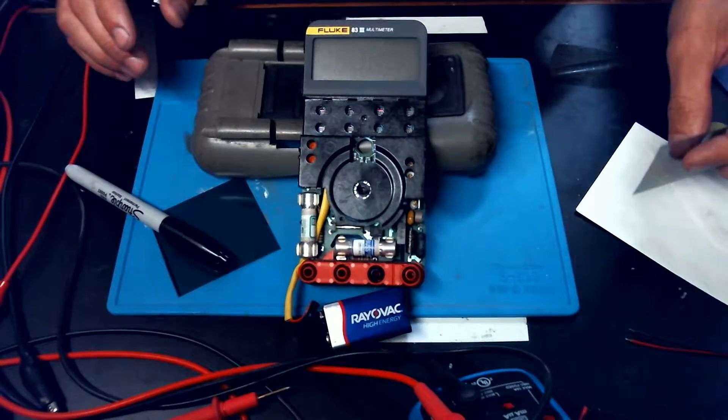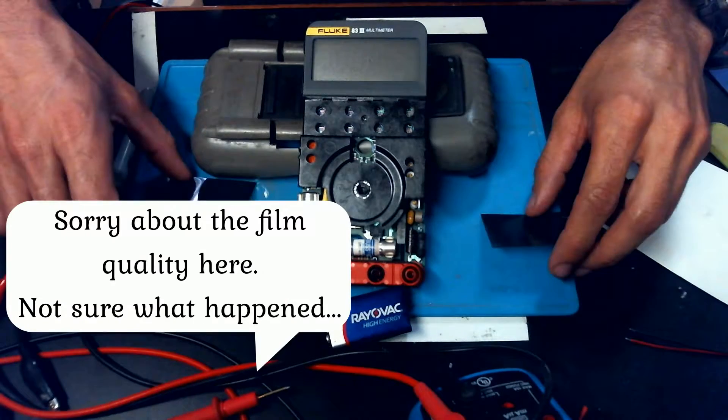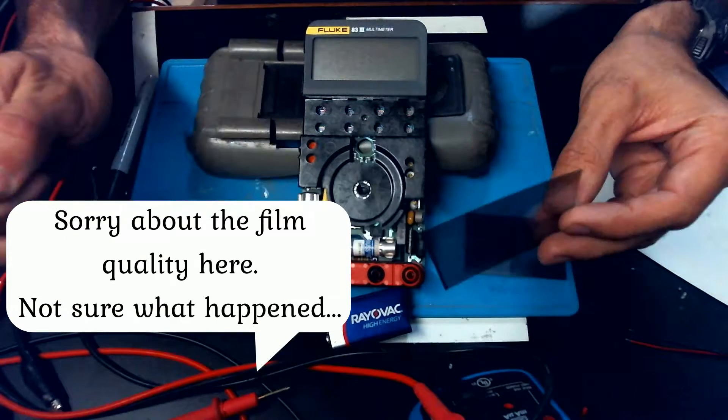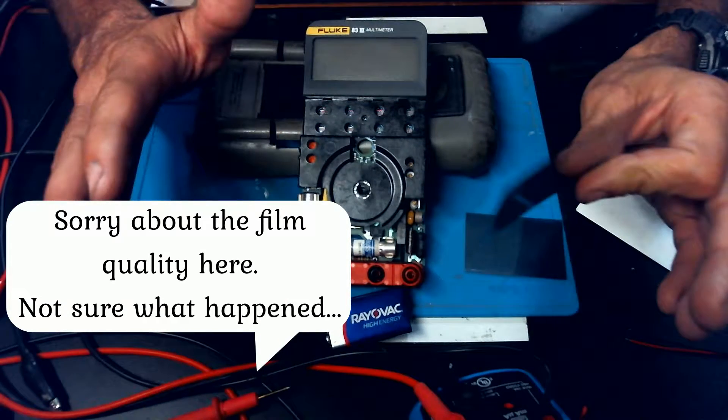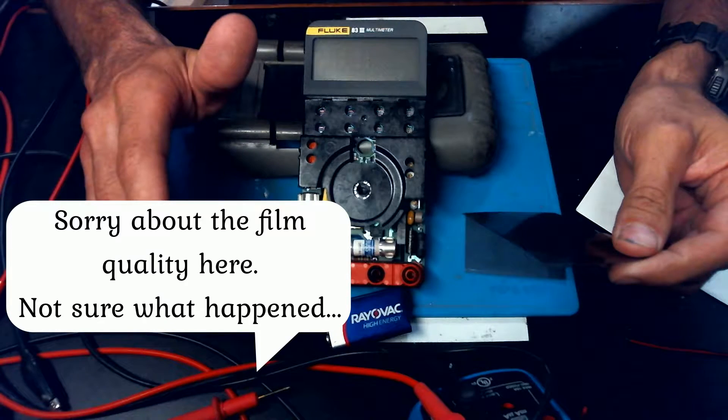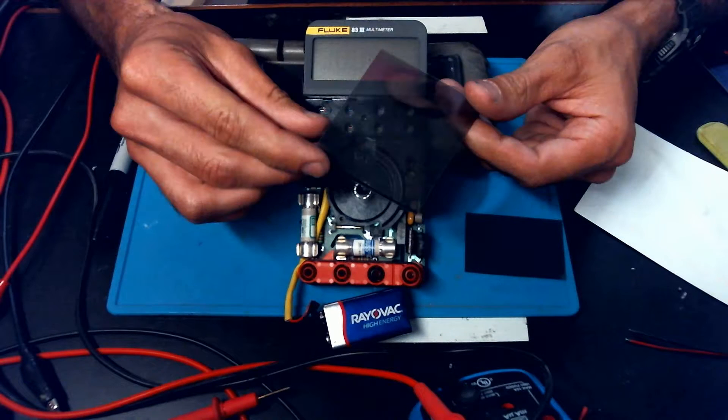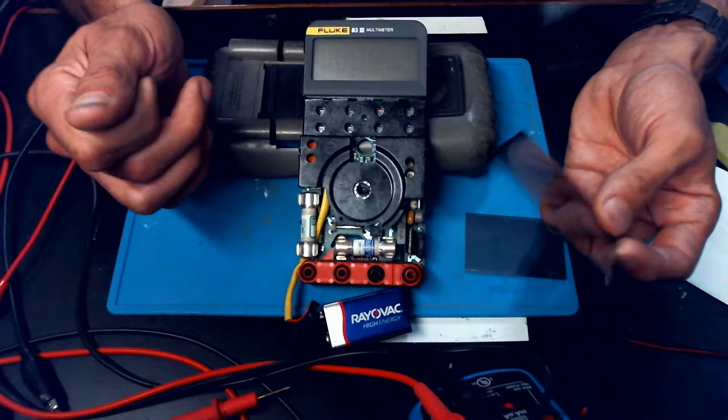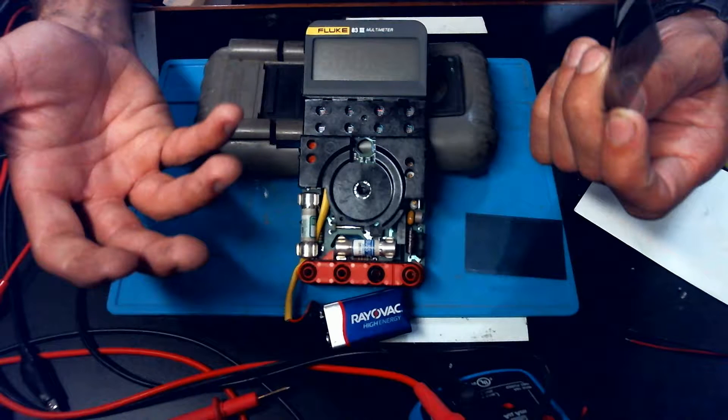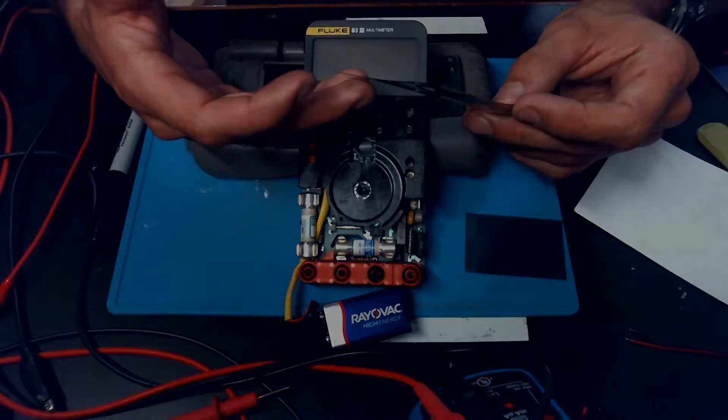Alright, so today we've got the polarizing screen in. And I figured we'd kind of go through a couple of things to look for whenever you're changing these. Now, the first thing is, I tried to get one with the adhesive on it, but whenever I got it, I discovered that, and this is actually very common, the adhesive is on the wrong side.